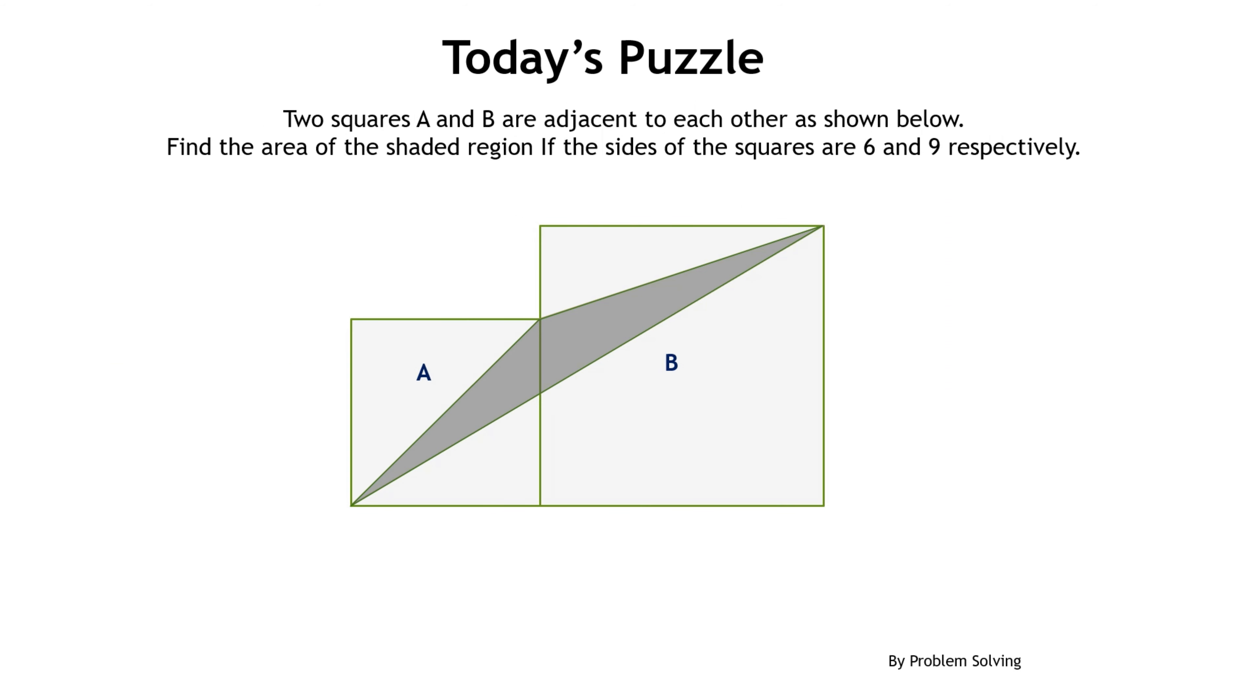So this is today's puzzle. Two squares A and B are adjacent to each other as shown below. We have to find the area of the shaded region if the sides of the squares are 6 and 9 respectively.